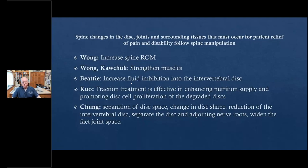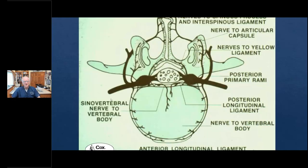Finally, the work of Chung, published in the famous radiology journal, who showed in real time that when you and I do this technique, the following things happen within the triple joint complex of the disc. We separate the disc space. We change the shape of the disc. We reduce intervertebral disc protrusion. We separate the disc and the adjoining nerve roots through the osteoligamentous canal, and we widen the facet joint space. As osteopathic literature says, what do we do? We stretch tissues. That's really what this is all about. That is what creates everything from increasing a disc space to stimulating the somatosensory cortex of the brain.